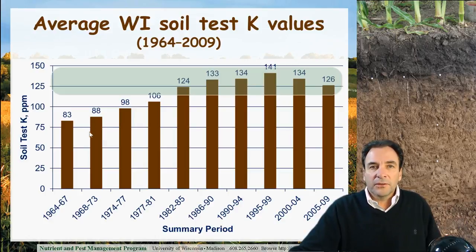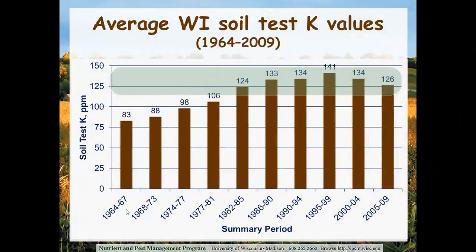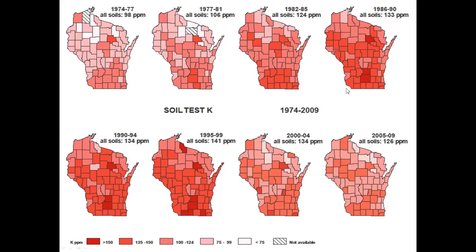This chart shows average soil test potassium levels in Wisconsin over a 50-year period from the mid-1960s to 2009. You can see a steady increase, but of concern is the decrease in soil test potassium levels in the last couple of sampling periods. Unlike the phosphorus chart where average levels were in the excessively high range, with potassium this bar represents the optimum range — and potassium levels are in that optimum range but certainly not excessively high. We're worried about this decline in soil test potassium values.